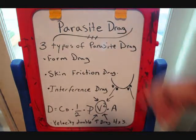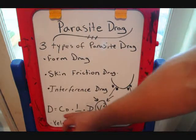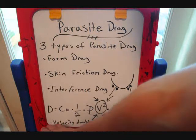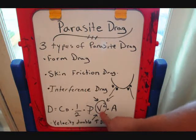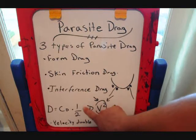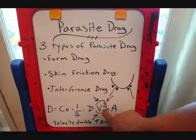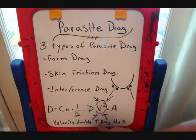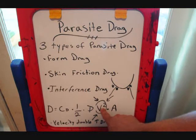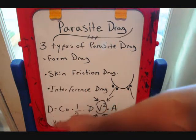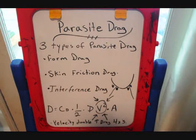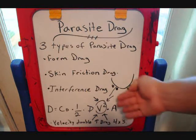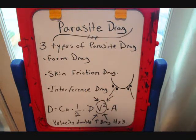The last thing we need to talk about with parasitic drag is the drag equation. We're not really going to get into this — the only thing we're going to look at here is velocity squared. When velocity doubles, you're going to increase your drag four times. Since we're squaring the velocity, the drag is going to increase four times because of that, and that's due to the equation of drag. You need to know that.